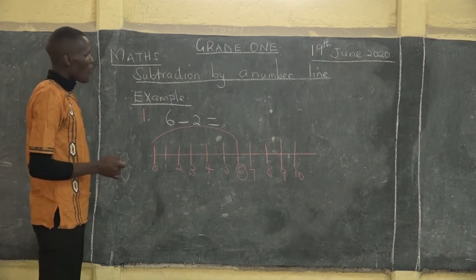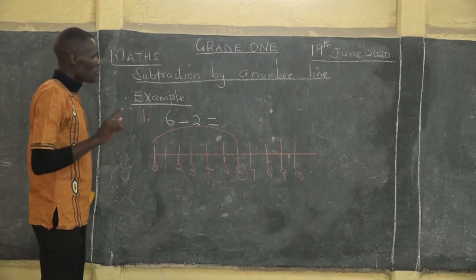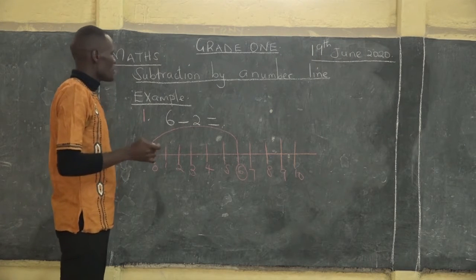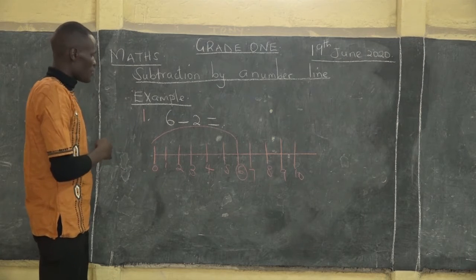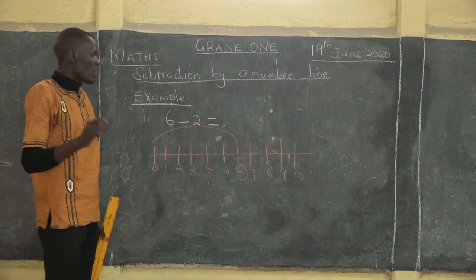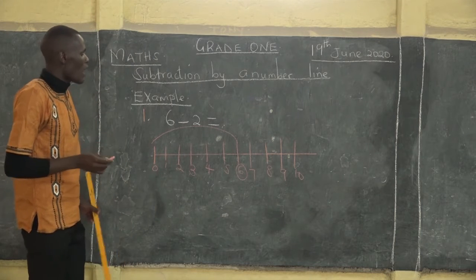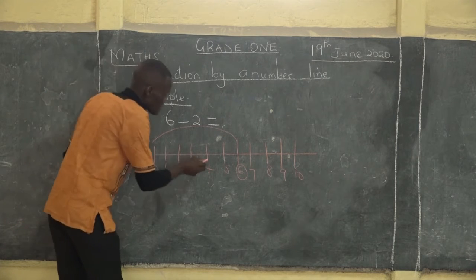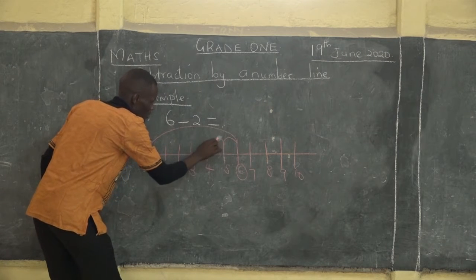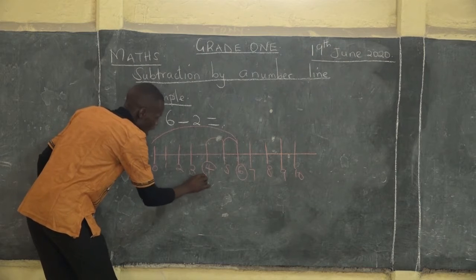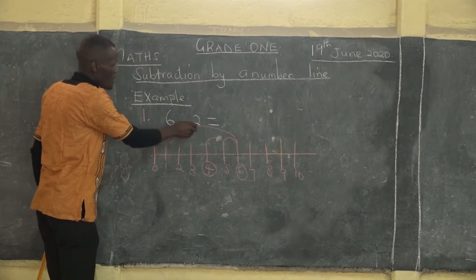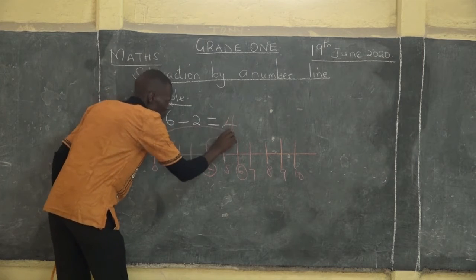Now, what are we taking away? We are taking away two. And that two we are taking away is the number of times that we shall jump towards the left. We are not going towards the right as we were doing in addition, but we are jumping towards the left because it's take away. So from our number six, we are going to jump two times: one, two. And this is our answer.